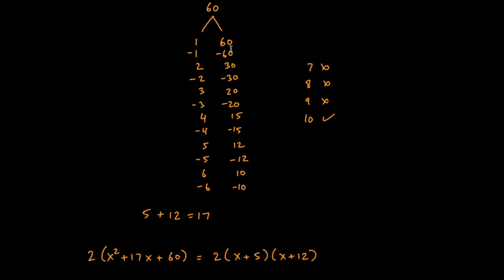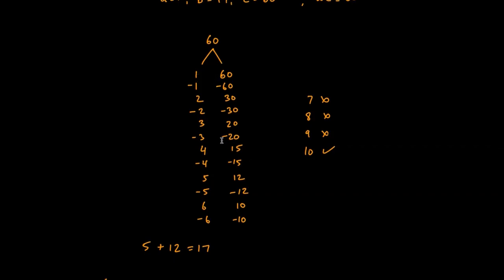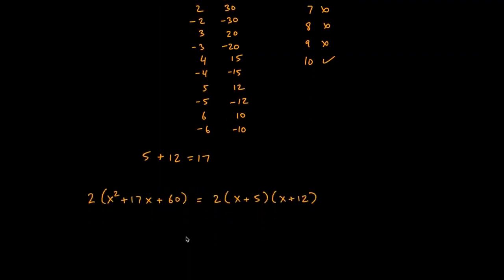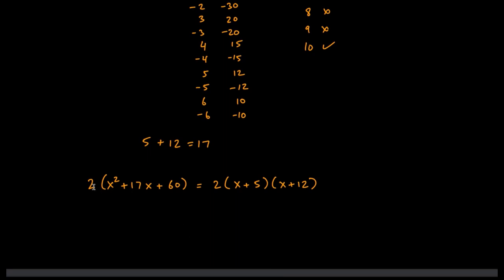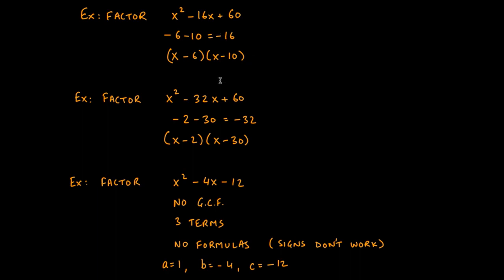We want a pair of factors of 60 that adds up to 17. The ones that add to 17 are 5 and 12, since 5 + 12 = 17. The GCF of 2 stays on the outside — it never vanishes. Because a is 1, the AC method lets us jump directly to the answer: 2(x + 5)(x + 12). The 5 and the 12 came from our factor table.